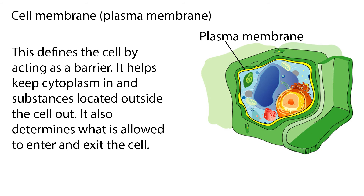The cell membrane, or plasma membrane, defines the cell by acting as a barrier. It helps keep cytoplasm in and substances located outside the cell out. It also determines what is allowed to enter and exit the cell.